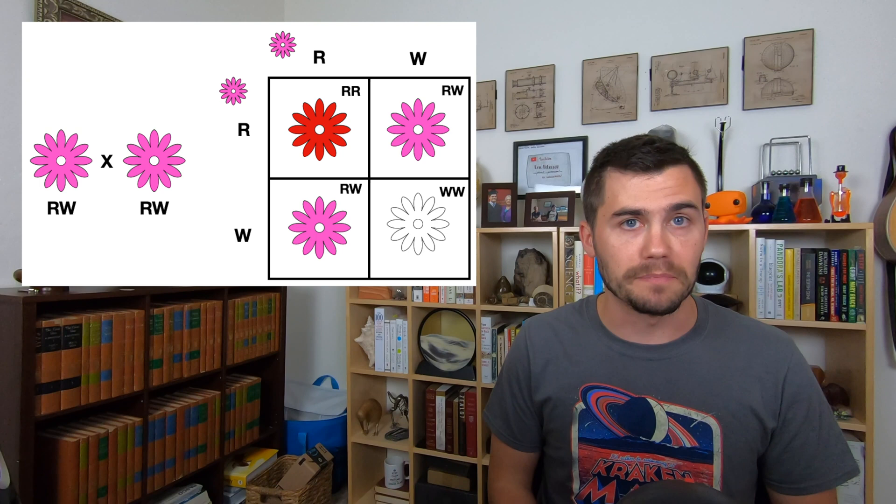This new phenotype is by no means permanent. Pink four o'clock flowers, if they self-pollinate, can have red, white, or pink offspring, with pink being the most likely.